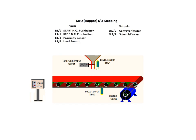We will start by examining the I/O mapping for the silo environment. Bit 0 of input rack 1 is connected to a normally open push button used to start the silo application. A normally closed push button used to stop the application is connected to bit 1 of the I/O input rack. A proximity sensor is being used to detect the arrival of a container at the filling station, and is connected to input rack 1, bit 3. A level sensor is connected to input rack 1, bit 4, and is used to detect when a container has been filled to the desired level.